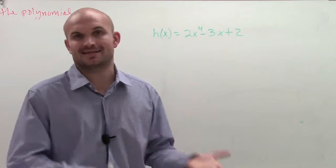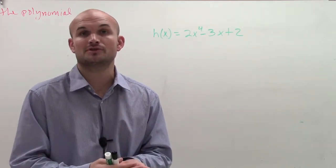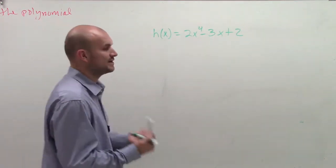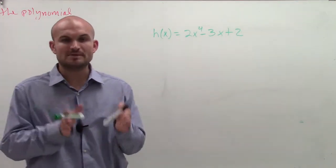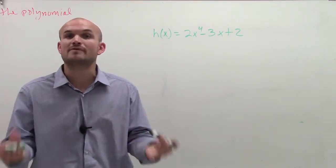So what Descartes rule of signs is going to tell us is the number of positive real zeros or negative real zeros. The first thing we're going to do is look for a variation of sign, meaning we're going to look between each term. If we go from a positive to a negative or a negative to a positive, we have a variation in sign.